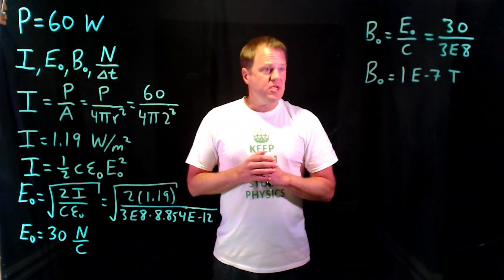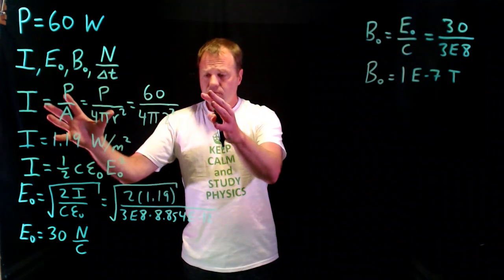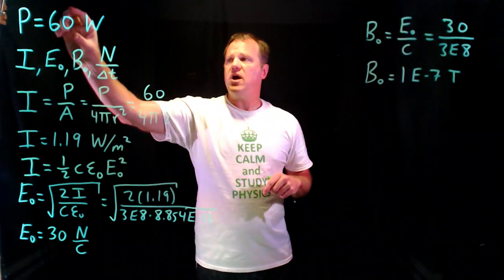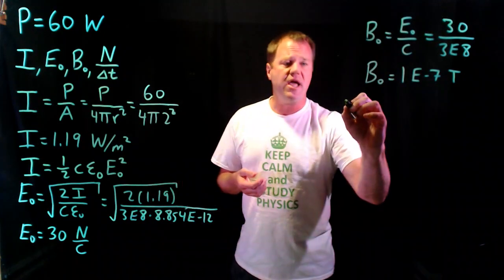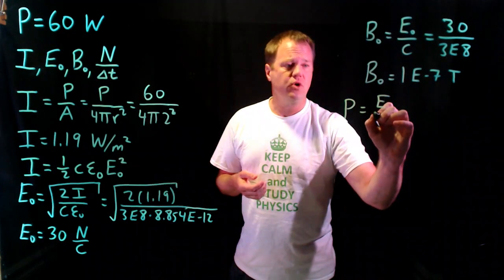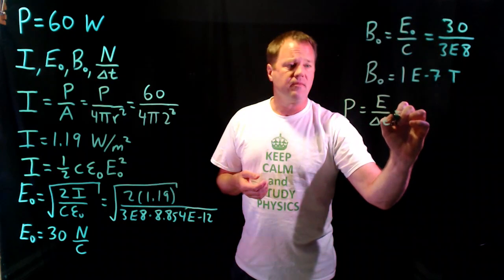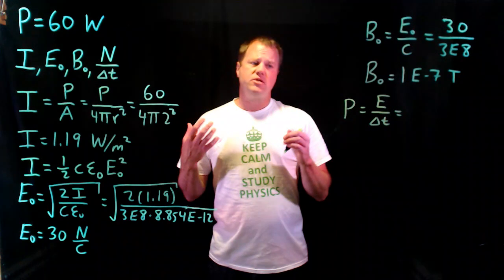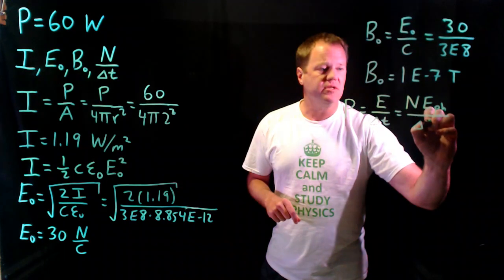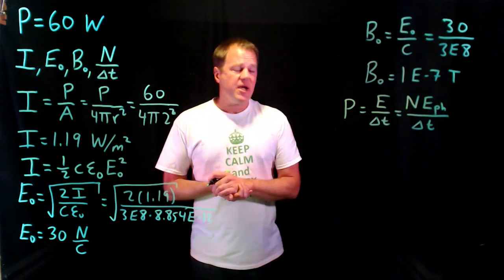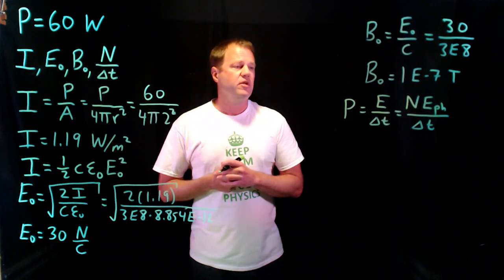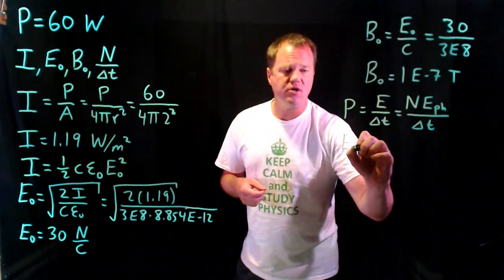Next we'll calculate the number of photons emitted in a given time interval. We can get this directly from the power. Power is energy over time interval, and the total energy emitted in terms of photons is the number of photons times the energy of an individual photon. So power equals n times the photon energy over time, giving us n over delta-t. We need to calculate the energy of a photon in terms of known quantities.